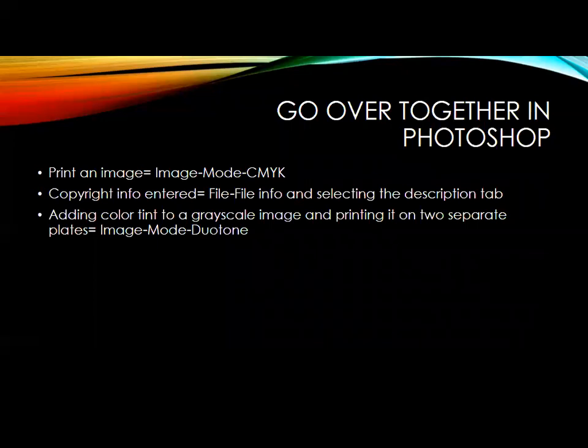As mentioned in the first PowerPoint: if you're printing an image, the image mode is CMYK. If we're working on a computer screen, it's RGB. You can enter type info into a file by selecting the description tab, which we'll talk about later. Adding a color tint to a grayscale image and printing it on two separate plates equals image mode duotone — we'll talk about those things eventually.